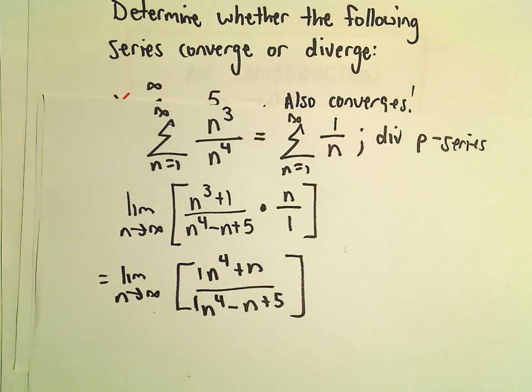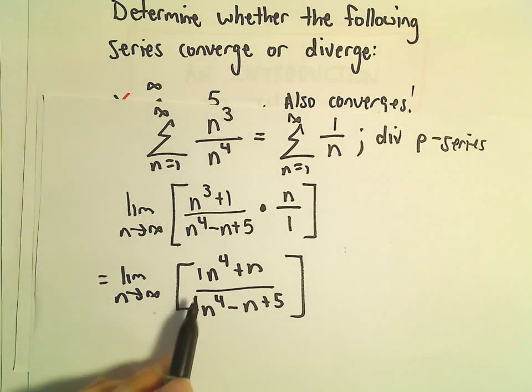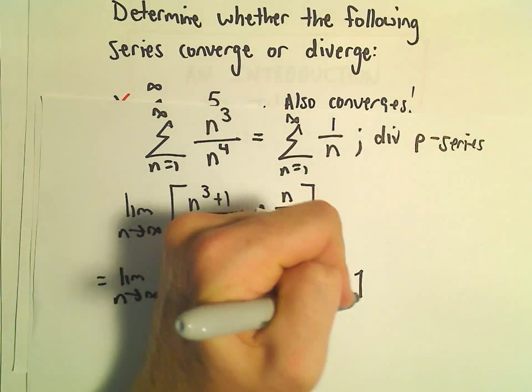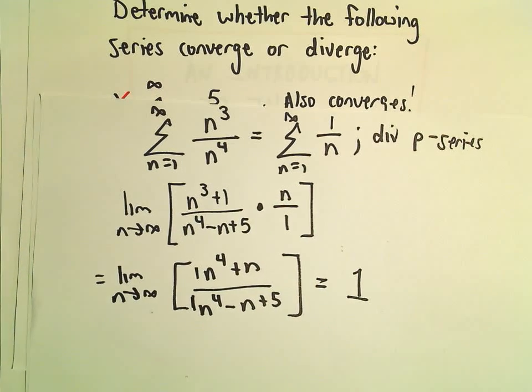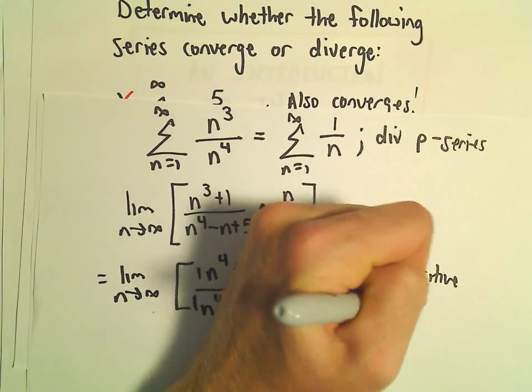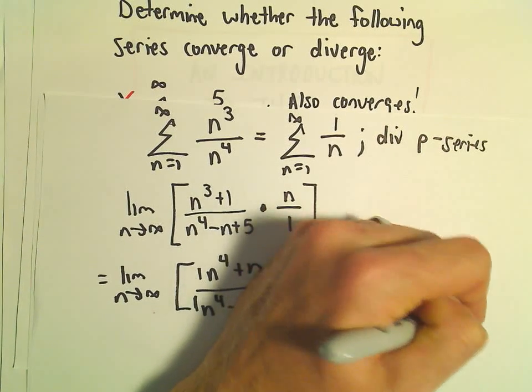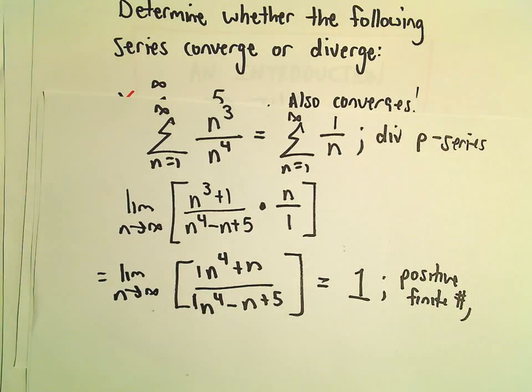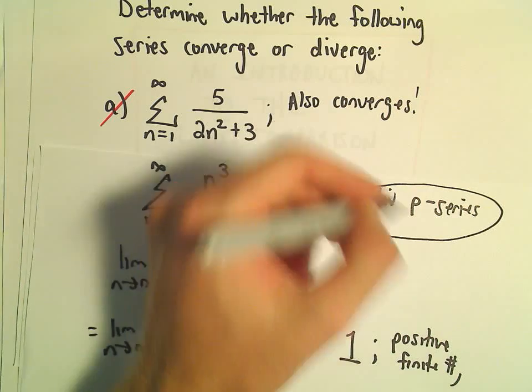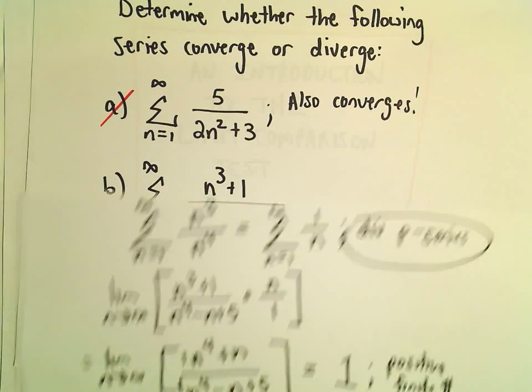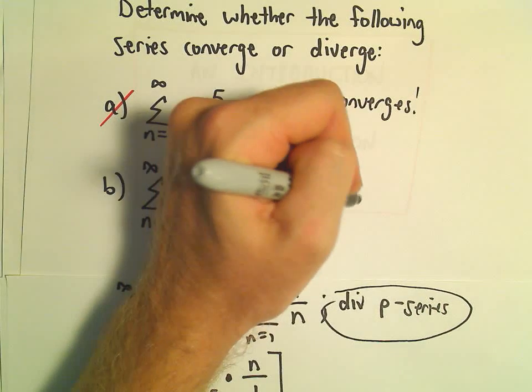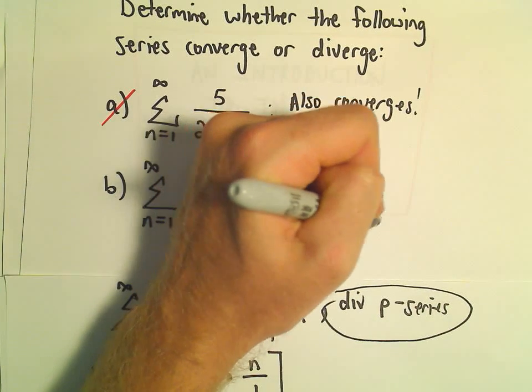We can just, the limit's going to equal the ratio of the leading coefficients, which is going to be 1 over 1. Or we'll get our limit to equal 1. And again, this is a positive finite number. So that tells us that both series do the same thing. In this case, since we compared it to a divergent P-series, that would tell us that our new series that we're interested in must also diverge.